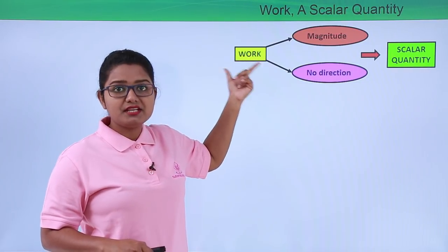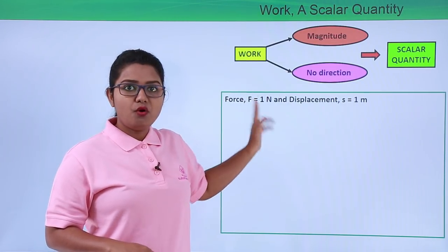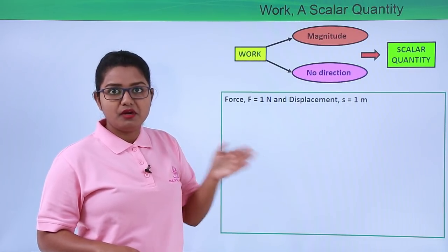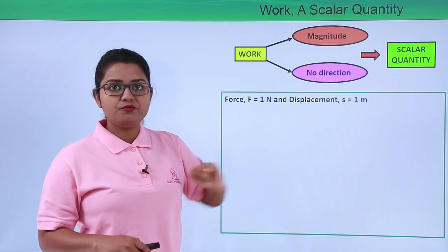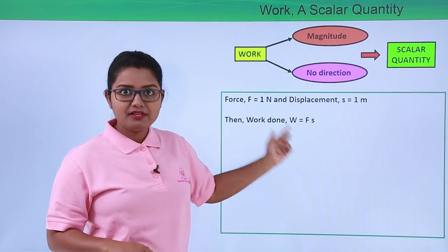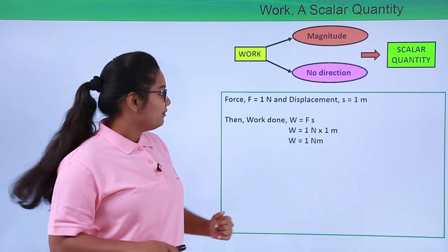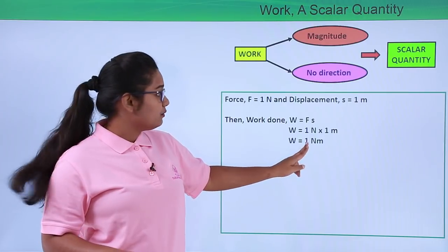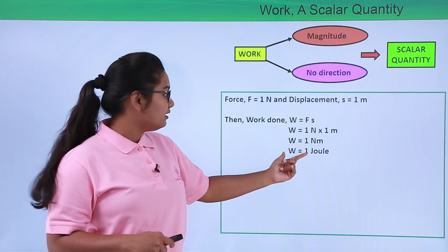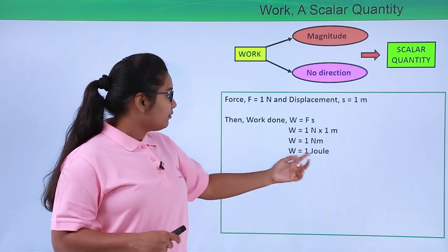Let us find out the unit in which we can measure work done. Let force be 1 Newton and the displacement caused by this force be 1 meter. In that case, work done W = F × S = 1 Newton × 1 meter. This unit, Newton meter, has a particular name which is called Joule. So the work done is measured in terms of Joule, which equals Newton meter. The unit of work done is Joule.